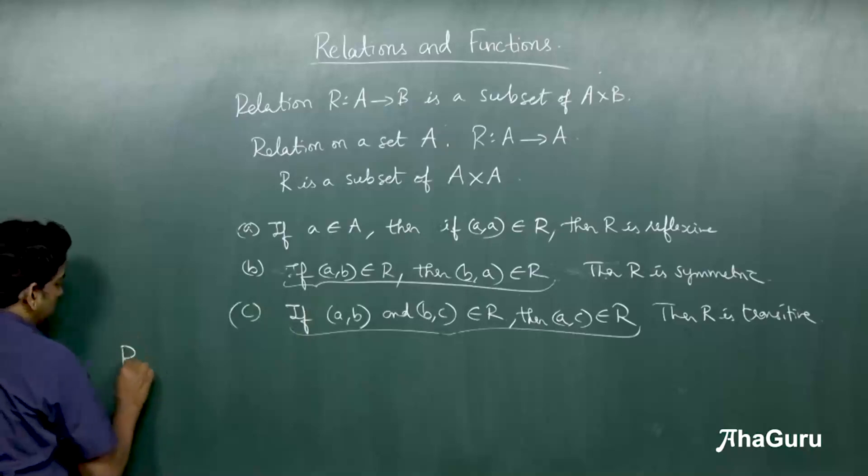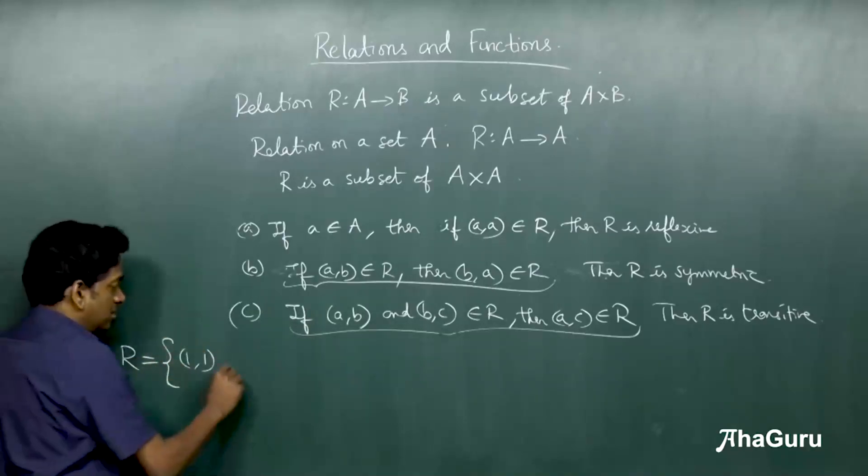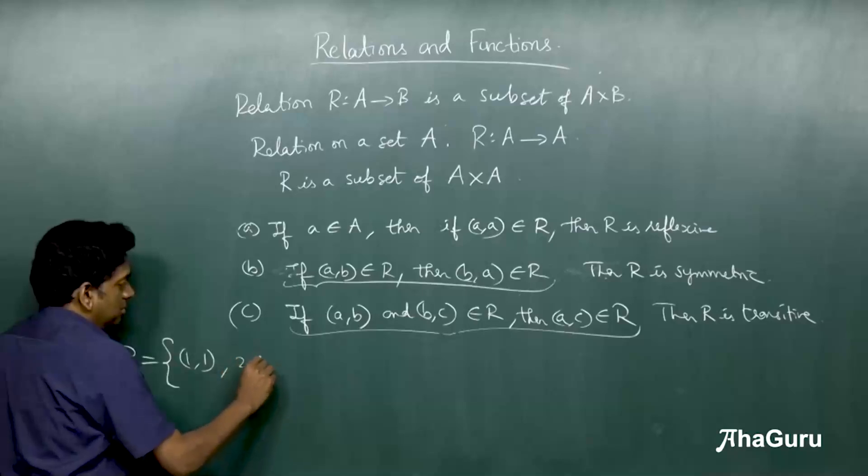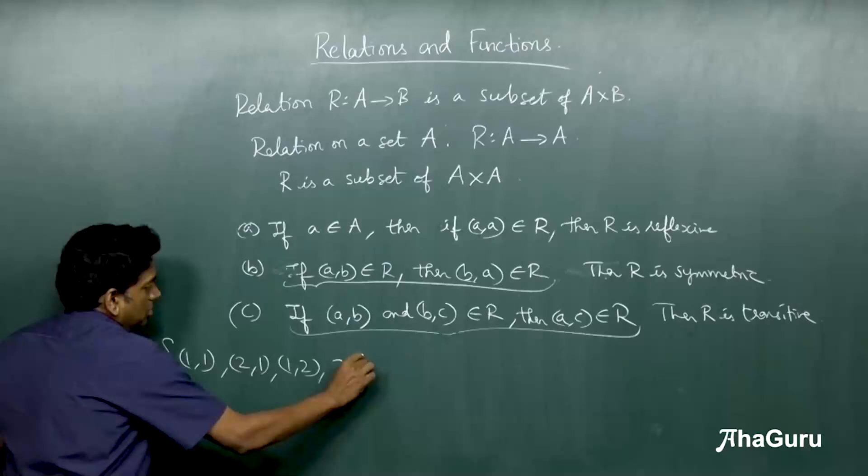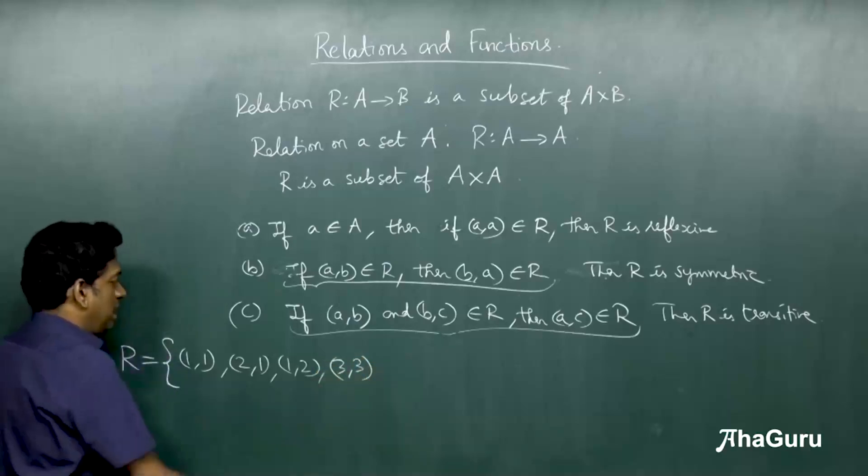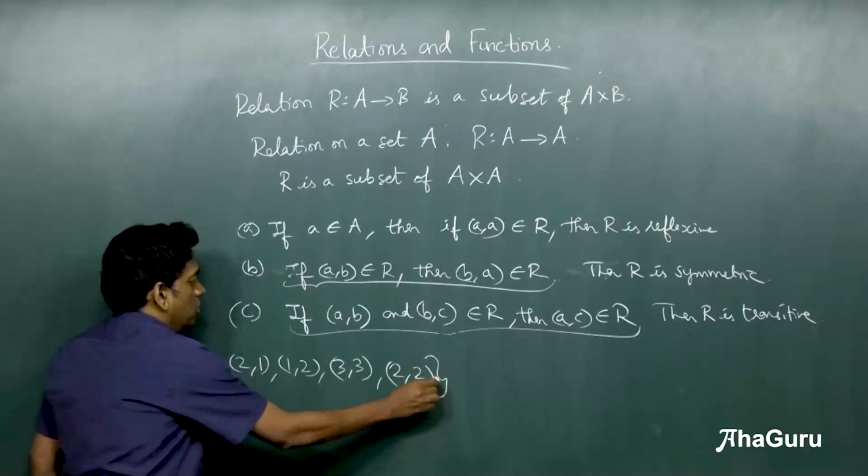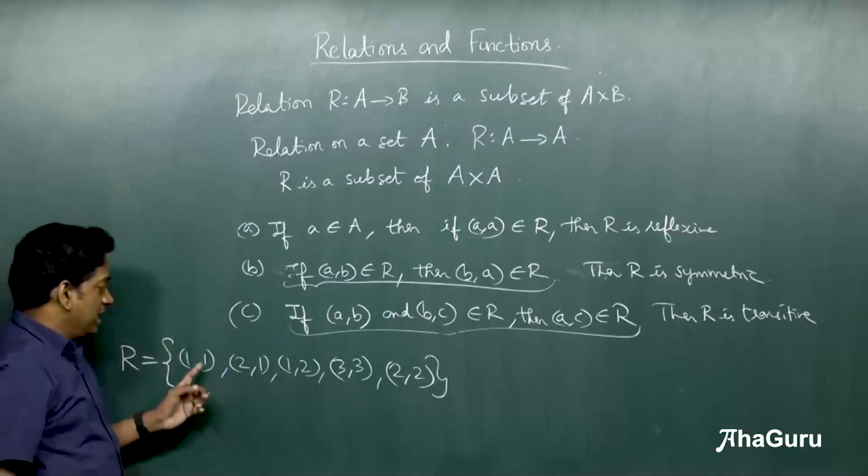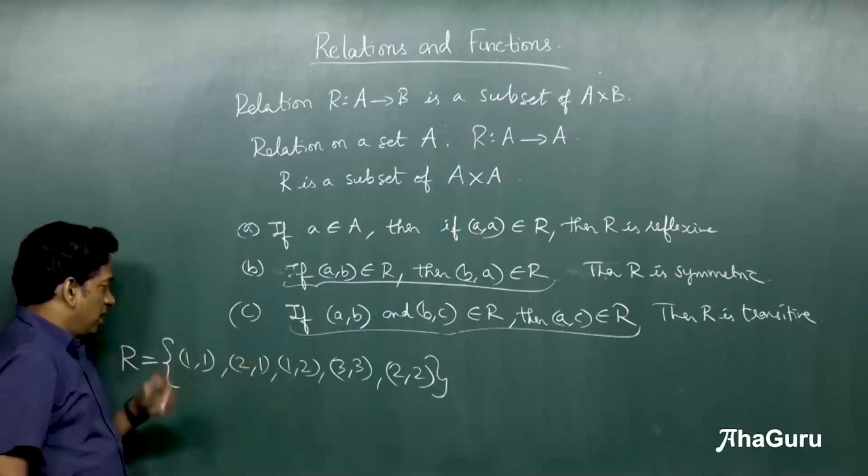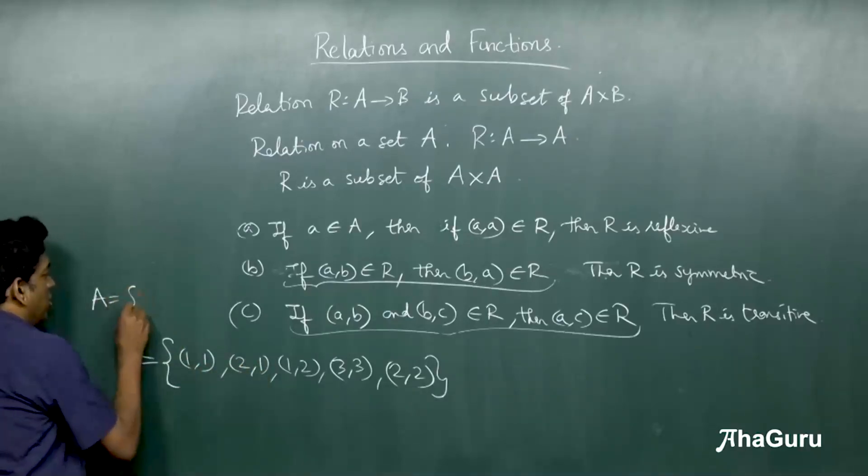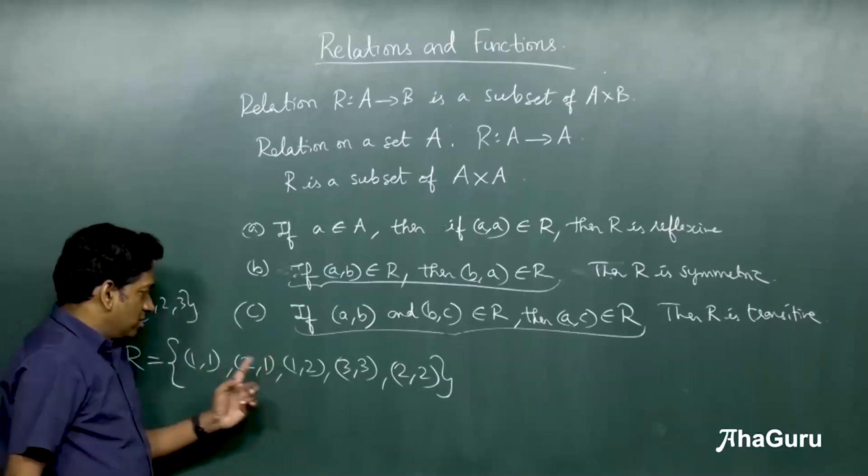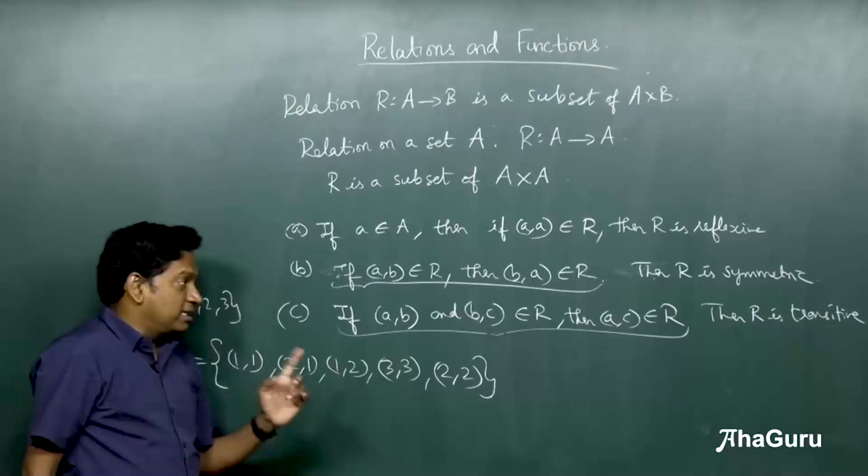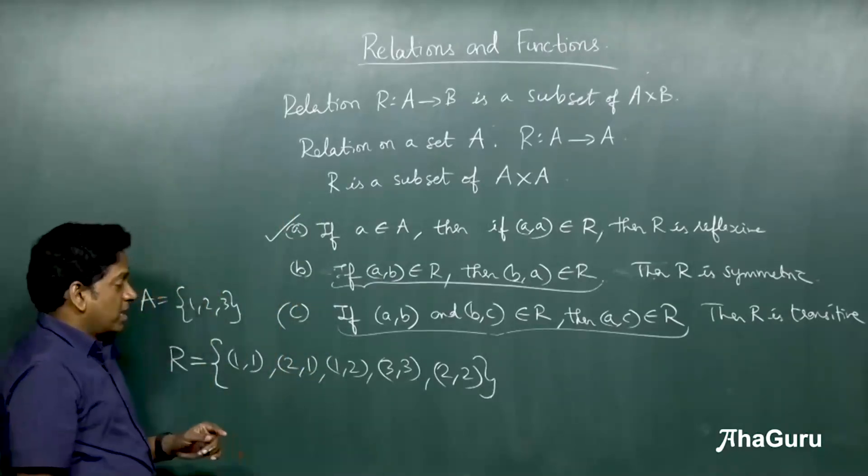For example, suppose we have an R which has something like (1,1), (2,1), (1,2), (3,3) and (2,2). Of course, R is a relation on the set A which has elements 1, 2, 3. Now, (1,1), (2,2) and (3,3) are there. So we can say it's reflexive.